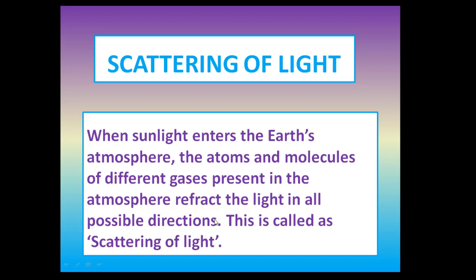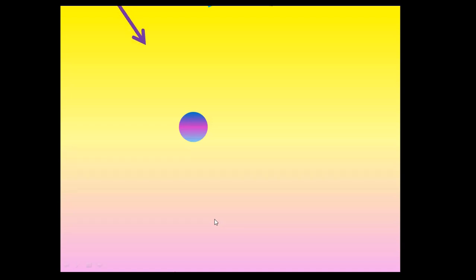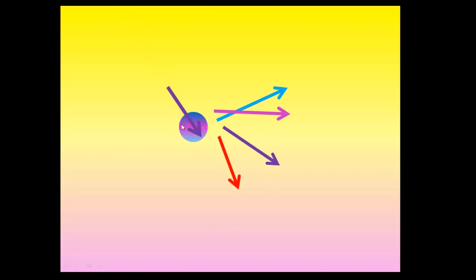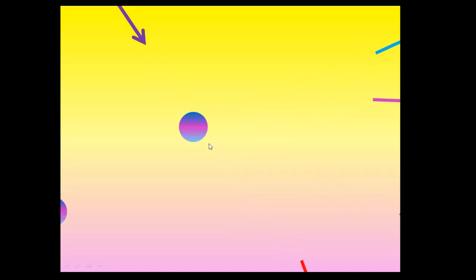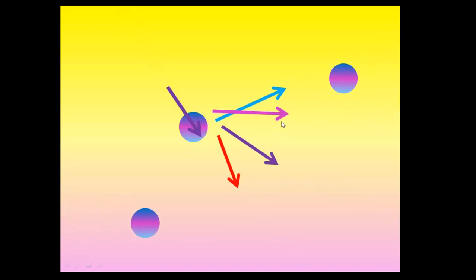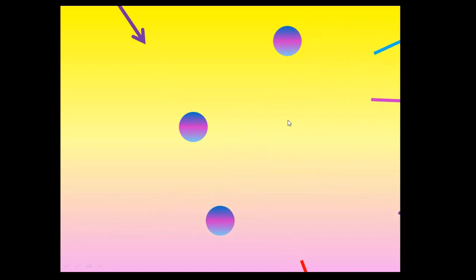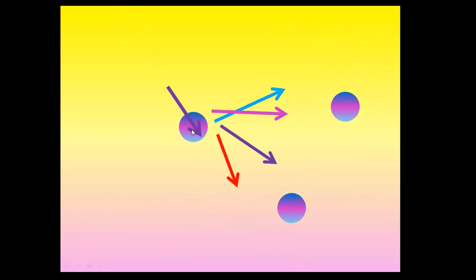Let me explain more about scattering of light. In the atmosphere, you take a scatterer. When the incident ray is incident on the particle, it will be scattered in all possible directions. The particle is not stationary — this molecule is also moving like other molecules in the atmosphere. When sunlight enters the atmosphere, it hits the molecule and then it will be scattered in all possible directions.